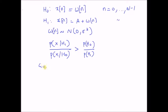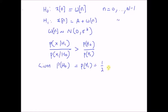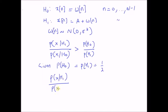Given that the prior probabilities P(H0) = P(H1), that is prior probabilities are both equal and equal to 1/2, then the test becomes: probability of x given H1 over probability of x given H0, and the threshold basically becomes equal to 1.